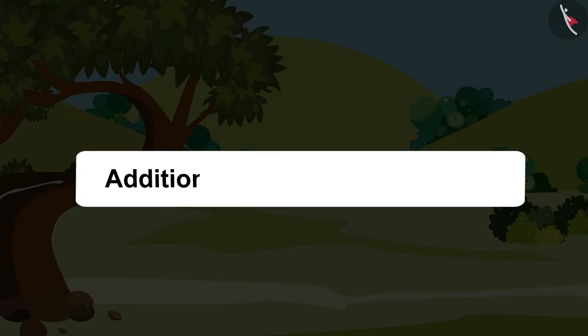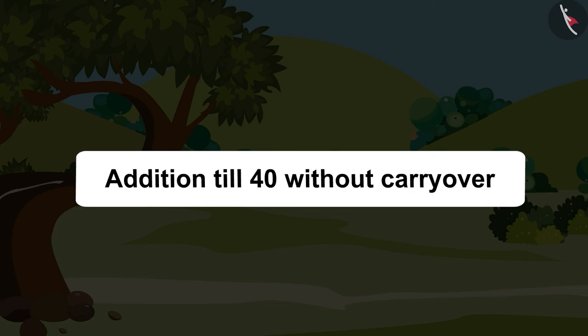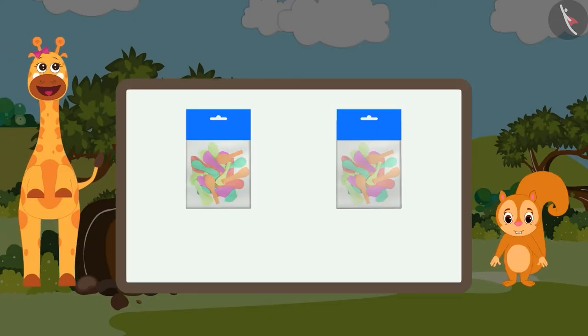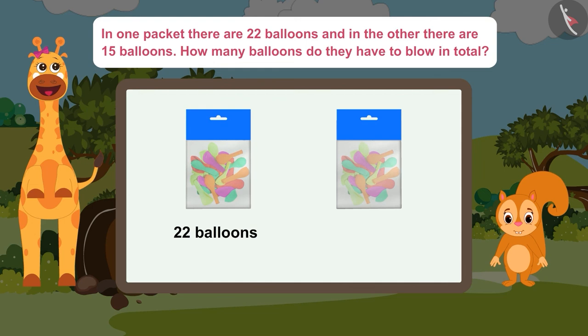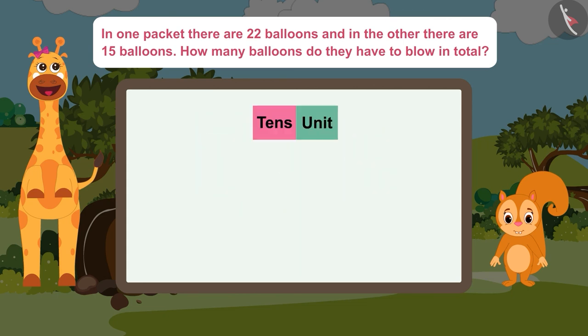Children, now it's your turn to do addition till 40 without carry over. Let's say that Gaffee and Sunny have two packets of balloons that they need to blow for the party. In one packet there are 22 balloons and in the other there are 15 balloons. How many balloons do they have to blow in total? You can try doing horizontal addition or you can also use vertical addition. Find the answer to this question and share the answer with your friends and family.